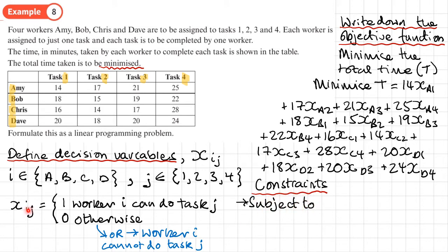The last part is to write down the constraints — subject to. Using binary coding: each worker can only be allocated to one task, so for Amy the sum of her row values equals 1, meaning X_A1 + X_A2 + X_A3 + X_A4 = 1. Similarly for Bob, Chris, and Dave — each row sums to 1, as only one allocation per worker is made.